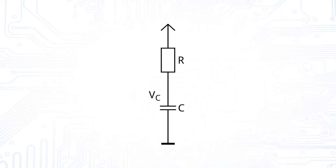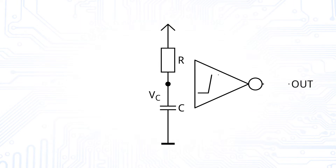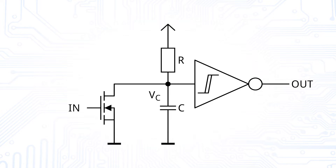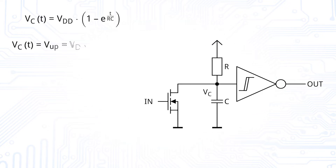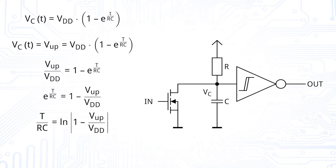But what if we want to have monostables with pulse widths that are longer than a few nanoseconds? We could for example use a circuit consisting of an RC network followed by an inverting Schmitt trigger. Additionally, we introduce an NMOS to discharge the capacitor. If the input is high, the NMOS will pull the input of the Schmitt trigger to low and the output will be high. If the input switches to low, the capacitor is charged. The output will drop to low as soon as the upper threshold voltage V_up is reached. The pulse width can be calculated by an exponential equation valid for charging a capacitor. By reformulating this equation and inserting proper threshold voltages and component values, we get the pulse width T.